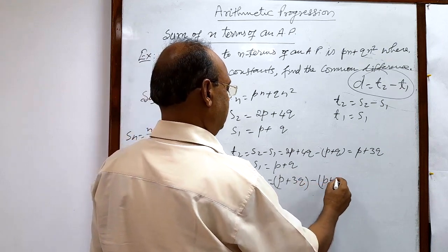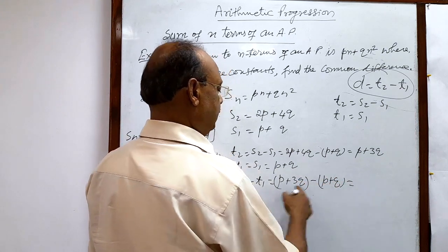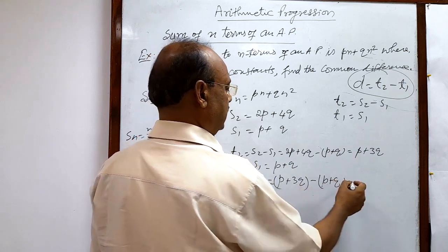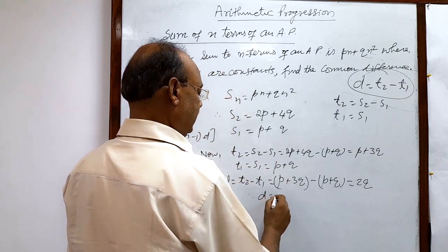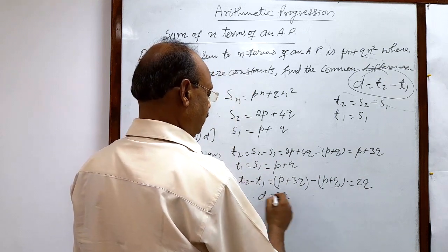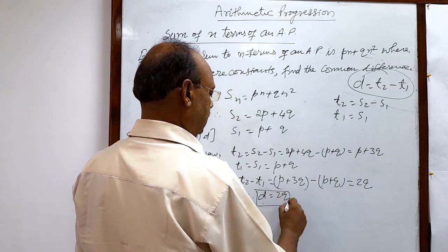Minus p plus q. So p minus p is 0, and 3q minus q is 2q. So finally we are getting here common difference d is equal to 2q. This is the answer.